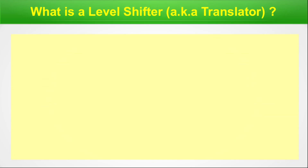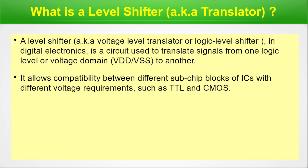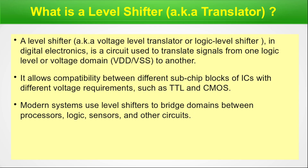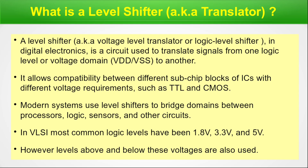What is a level shifter, also known as the translator? A level shifter, also known as a voltage level translator or logic level shifter in digital electronics, is a circuit used to translate signals from one logic level or voltage domain to another. It allows compatibility between different sub-chip blocks of ICs with different voltage requirements such as TTL and CMOS. Modern systems use level shifters to bridge domains between processors, logic, sensors, and other circuitry. In VLSI, the most common logic levels are 1.8V, 3.3V, and 5V. However, nowadays the VDD has come down to almost 1V or 1.1V and even below in the sub-10 nanometer node — details available in the ITRS roadmap.